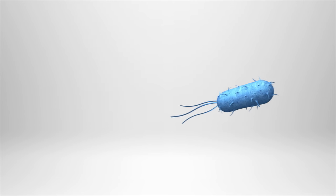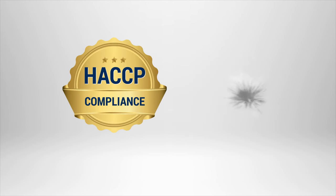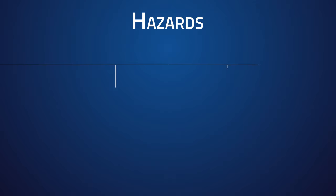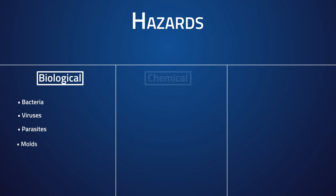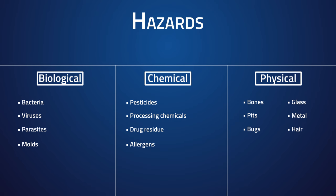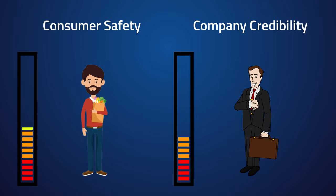For food processors, HACCP plans are the best way to protect consumers and prevent outbreaks of foodborne illness. HACCP is an approach to maximizing food safety through identifying biological, chemical, and physical hazards that could render food unsafe, as well as monitoring food products through all stages of processing to ensure safe conditions are maintained. HACCP plans are vital to consumer safety and company credibility.